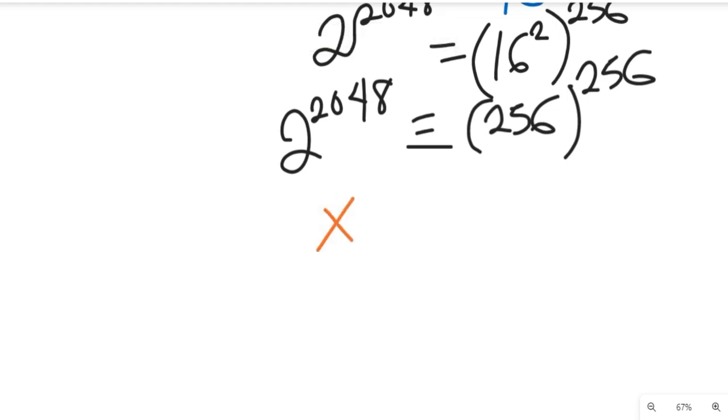So if we equate this to that, we are simply going to have our x to the power of x equal to 256 to the power of 256. So what do you notice here?